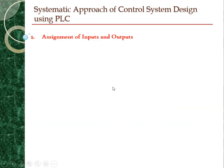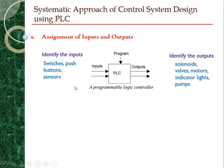In the next step, you need to know what the inputs and outputs of your PLC program are. You have to identify the inputs — whether they are coming from switches, push buttons, or sensors. You also need to identify the outputs of the external system, such as what actuators you need to control — for example, a solenoid valve, a motor, lights, or pumps.